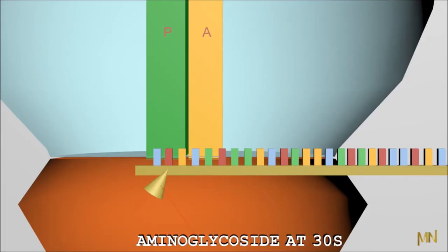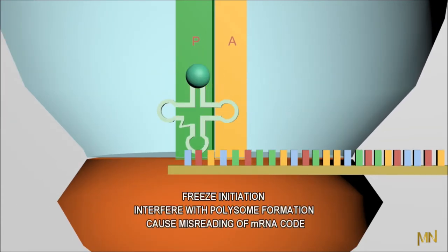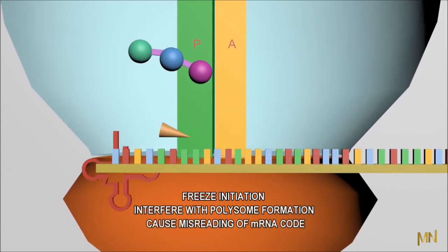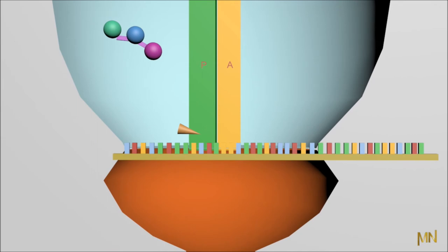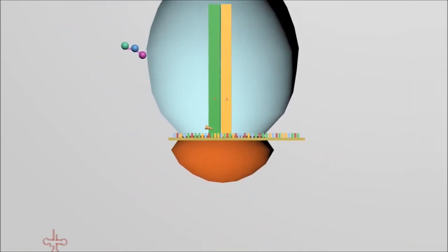Let us see the drugs inhibiting this process. The aminoglycosides bind to 30S as well as 50S subunits leading to freezing of initiation, interferes with polysome formation and causing misreading of the mRNA code that is producing an aberrant protein which gets incorporated onto the cell envelope thereby causing lysis.